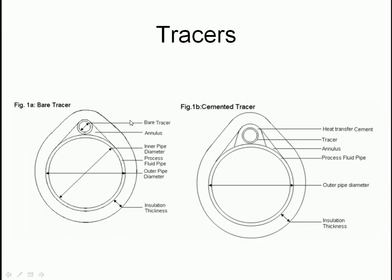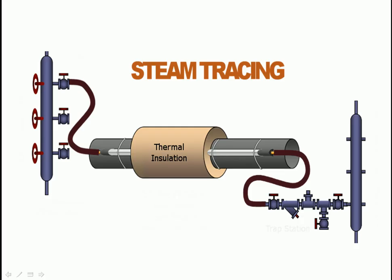This is what tracers look like - you've got a little pipe, and then a jacket all the way around it. That pipe can either be a steam pipe or a hot water pipe where hot water is pumped through. With steam tracing, you've got thermal insulation, and your pipe goes through the insulation which ensures you don't lose too much heat and that the heat is evenly distributed - which is very important.